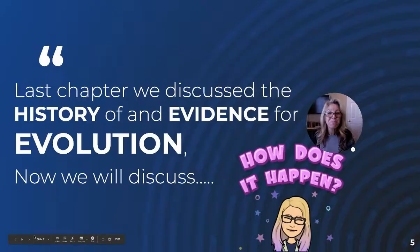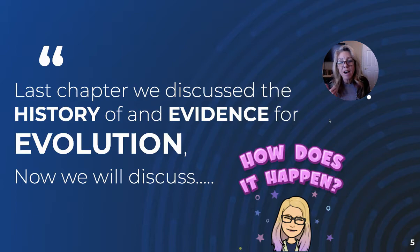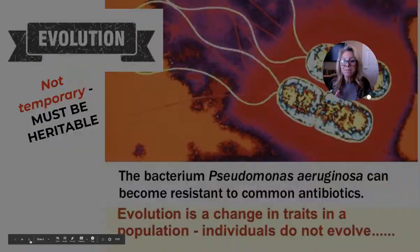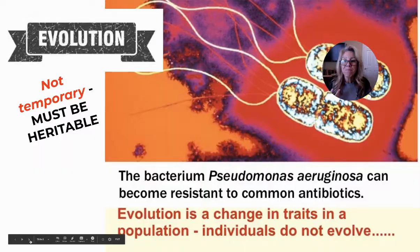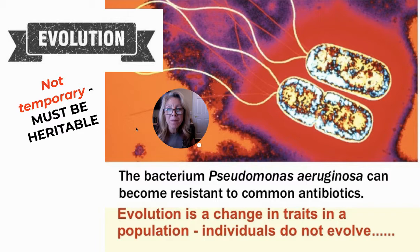So the last set of videos that I did, we talked about the history of evolutionary thought and the evidence for evolution. This one focuses on how evolution can occur. The big thing we need to remember is that evolution is not temporary — it is a heritable change; it's in the DNA.